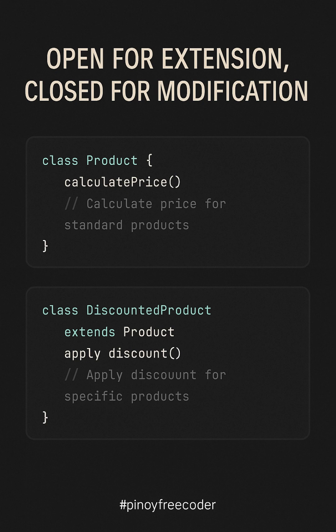To wrap up, the Open or Closed Principle helps us design systems that are easy to extend and maintain. By keeping the core structure of our code closed for modification, we avoid breaking existing functionality while adding new features. The principle promotes cleaner, more scalable code by encouraging us to extend existing classes instead of modifying them. This approach not only makes your code more flexible, but also makes it easier to manage as your system grows. Remember: Open for Extension, Closed for Modification — this is the power of OCP.